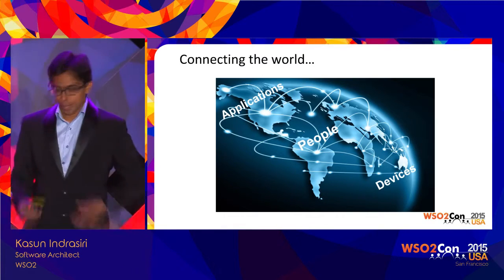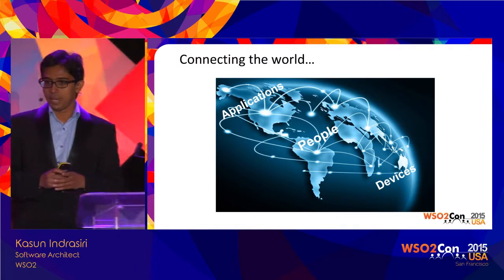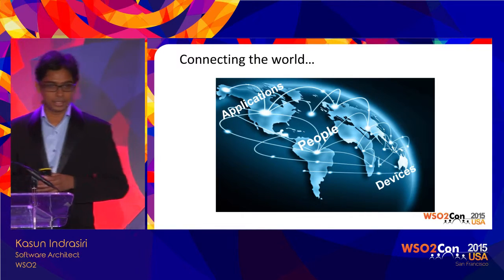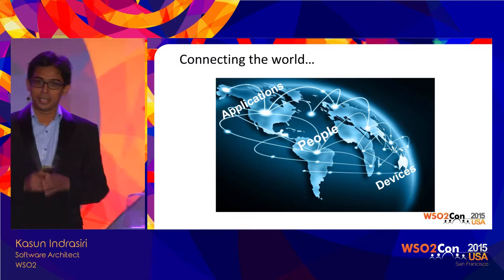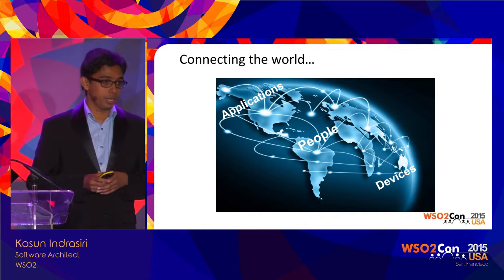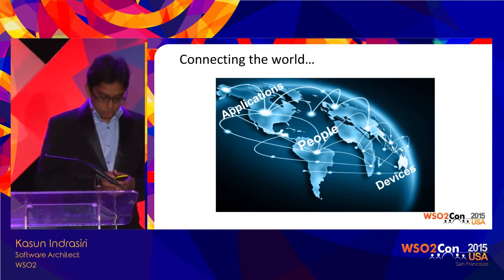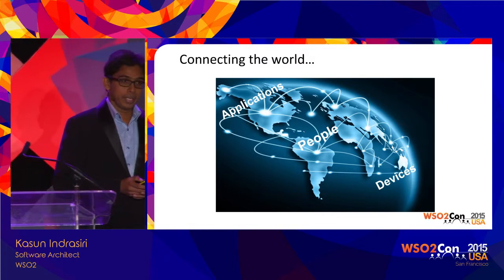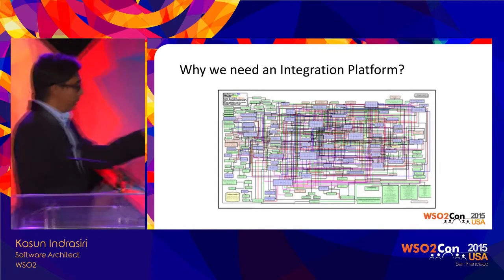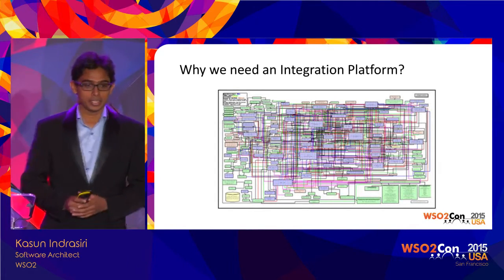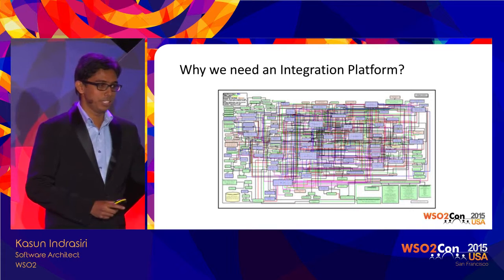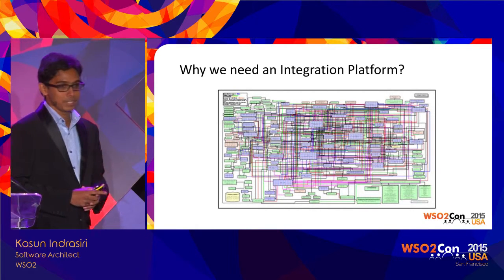Our main objective of the entire WSO2 platform is to help you build a connected world or connected business. In that regard, building an integrated business — integrating whatever devices, systems, and applications you have in your enterprise — is a key aspect. When it comes to integrating your existing systems and services, you have probably come across a particular kind of architecture, which you may have learned as an anti-pattern of enterprise integration, or which may be very similar to the architecture you are currently working with.